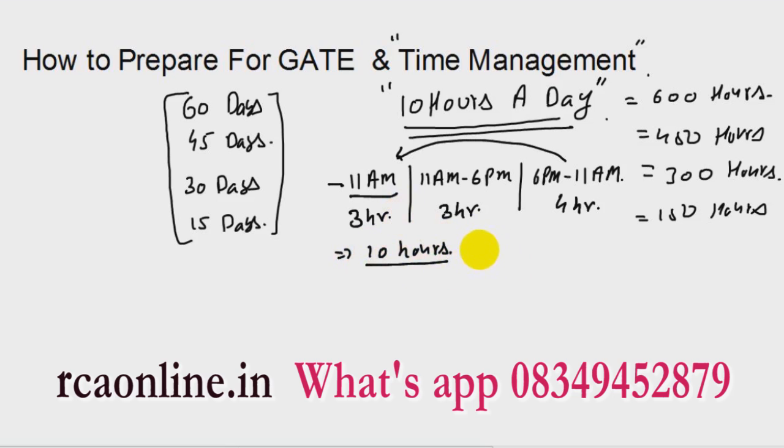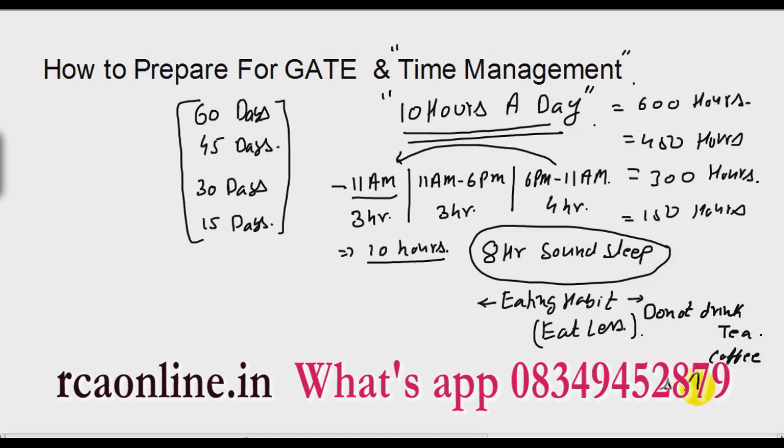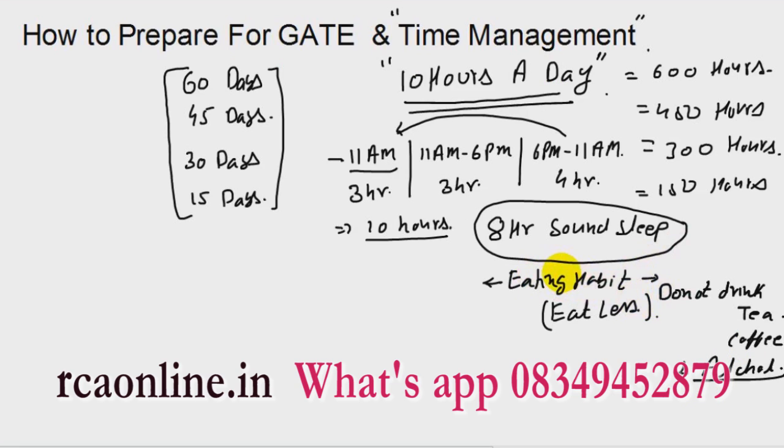For the remaining time out of 24 hours, have at least 8 hours of sound sleep. It is very important. That is the first and foremost thing. Second important thing is about your eating habits. I know it's difficult for students, but try to eat less. Do not drink tea, coffee, or alcohol. 10 hours study, 8 hours sound sleep, and eating habit: eat less.